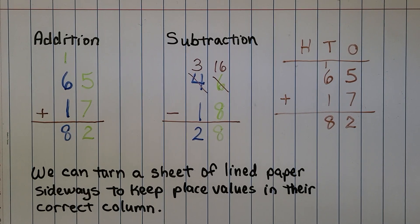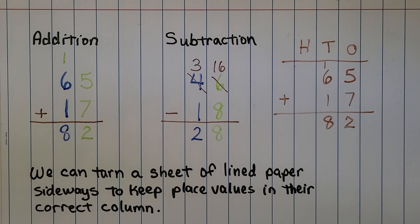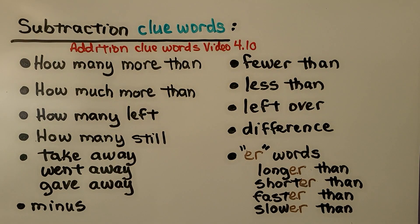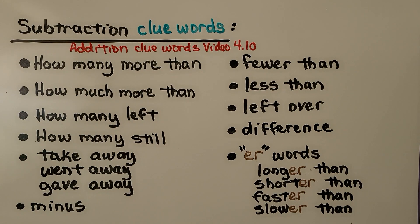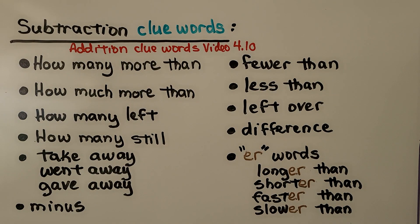Remember, we can turn a sheet of lined paper sideways to keep place values in their correct columns — that way we'll have less chance of making a mistake. When reading word problems, look for clue words that tell you whether to subtract or add. That will help you write your equation and choose the correct operation.